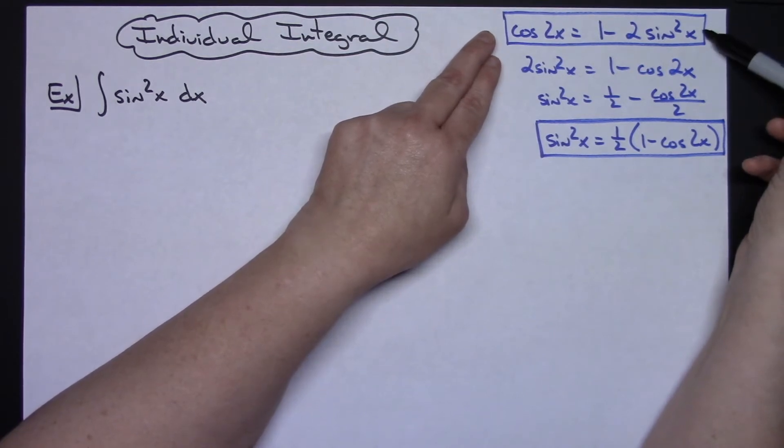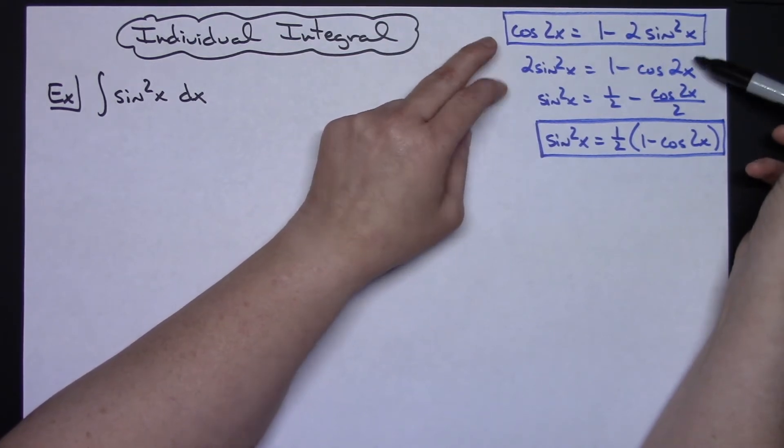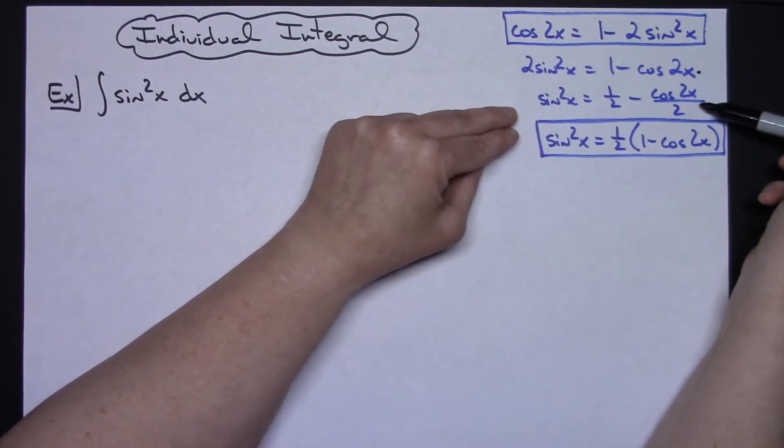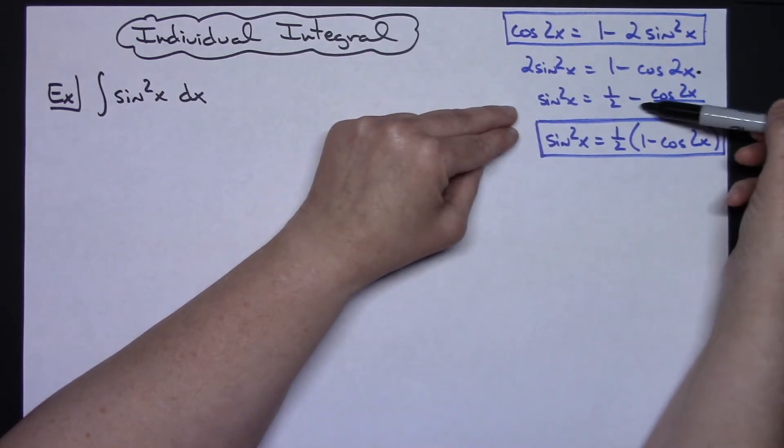And then from here you can just do algebra and manipulations. Rewriting the equation, I've got 2 sine squared x is equal to 1 minus cosine 2x. I can divide off the 2 off both sides. I'm going to have a 1 half here,